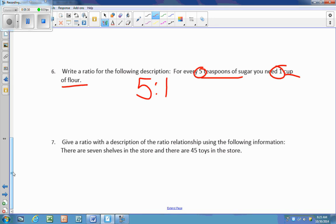Number seven, give a ratio with the description of the ratio relationship using the following information. There are seven shelves in the store and there are 45 toys. So for seven shelves, 45. Let's go to the next question.